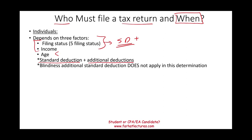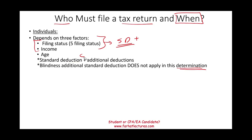You might have an additional standard deduction for blindness, but the blindness additional standard deduction does not apply in this determination — it does not apply. In other words, you cannot use the blindness additional deduction. So if someone is blind, the government will give them an additional deduction, but you cannot add it to the standard deduction in order to determine whether you should file or not. Just bear that in mind because sometimes they might trick you — yes, there is an additional deduction, but you don't use it.